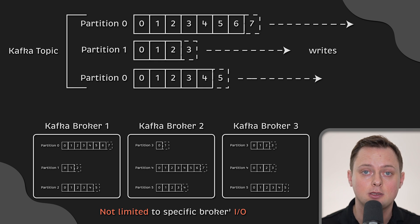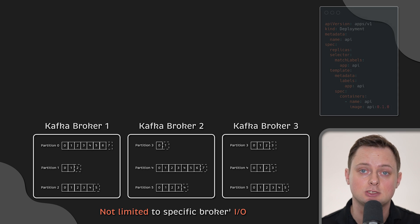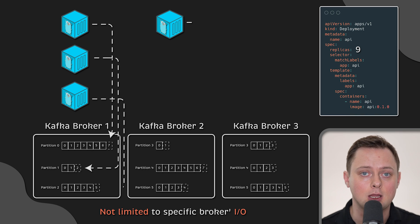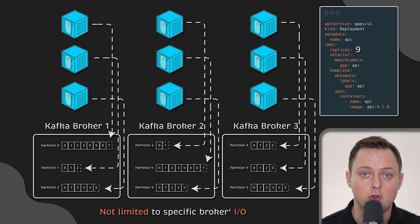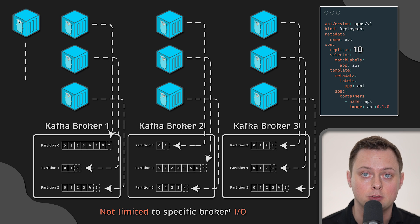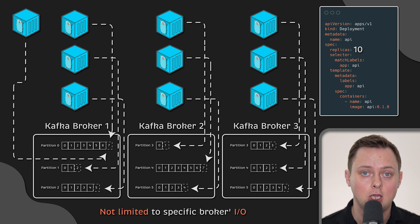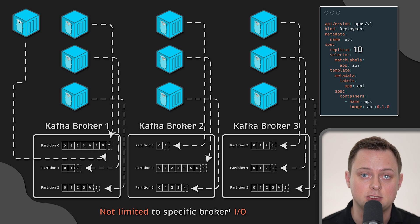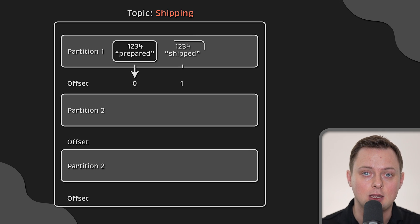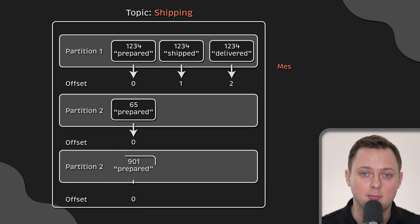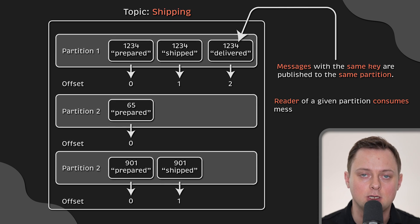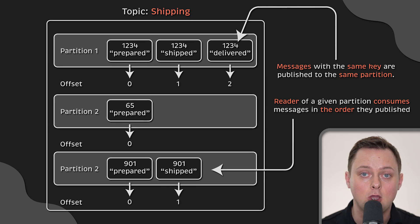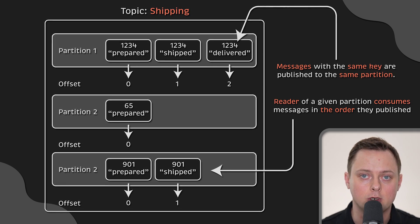Just scale the number of partitions and increase the number of consumers. In many cases, you want to scale your application to the same number of partitions. For instance, if you have nine partitions, you can set the replica count for your application to nine as well. Beyond that point, your replicas would read from the same partitions, which could be a bottleneck — so you would need to scale the partitions first and then the application. When a new message is written to a topic, Kafka adds it to one of the topic's partitions. Messages with the same key, for example customer ID, are published to the same partition. Kafka ensures that any reader of a given partition always consumes messages in the same order they were published.